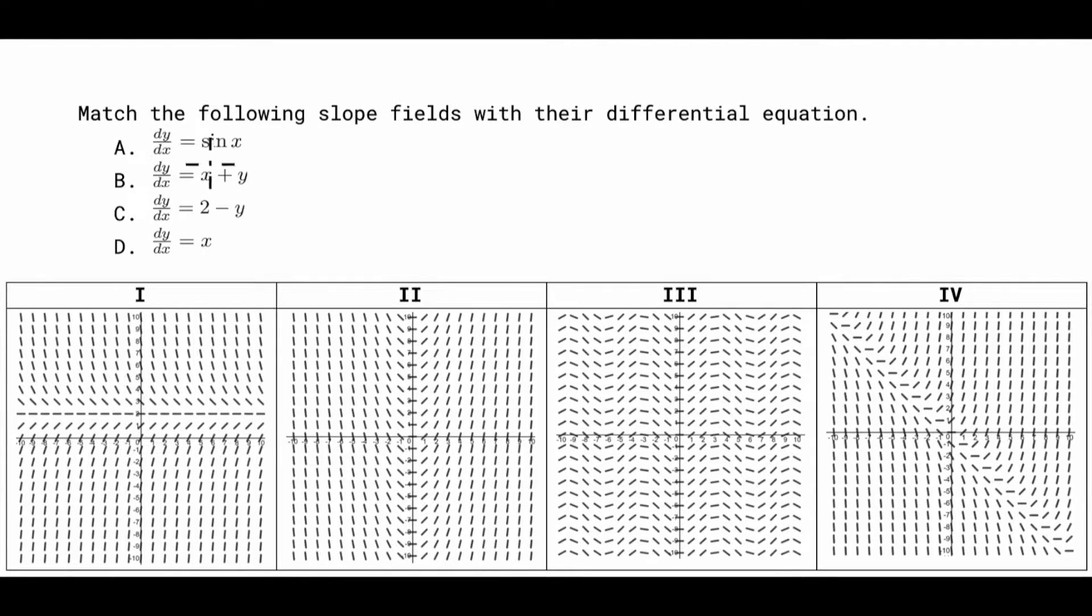So I'm going to start with A right here with sin x. And if you notice it says the derivative is equal to sin x. So the derivative is only based on the value of x. That means the derivative should only be changing with x because y is not on this side of the equation. So we are going to be looking for one of these Roman numerals here to match up with it where the y is the same throughout the entire thing.